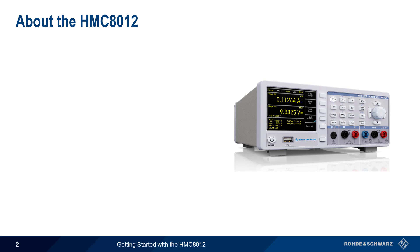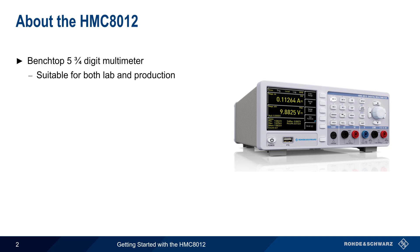Let's start with a brief overview of the HMC. The Rohde & Schwarz HMC 8012 is a benchtop 5¾ digit multimeter suitable for both lab and production use. It can make true RMS measurements of both AC and combined AC plus DC.